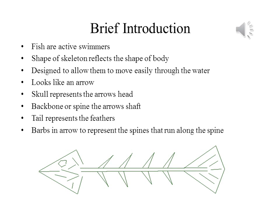Because the term fish includes such a diverse array of animals, it is difficult to talk in a general way about an average fish. Most fish are active swimmers, and the shape of their skeleton reflects the shape of their body, which in most cases is designed to allow them to move easily through the water they live in.